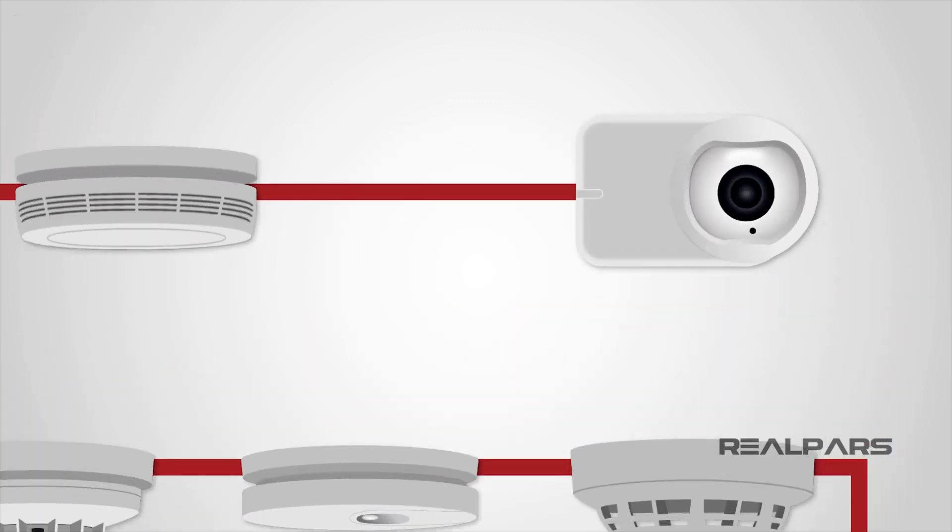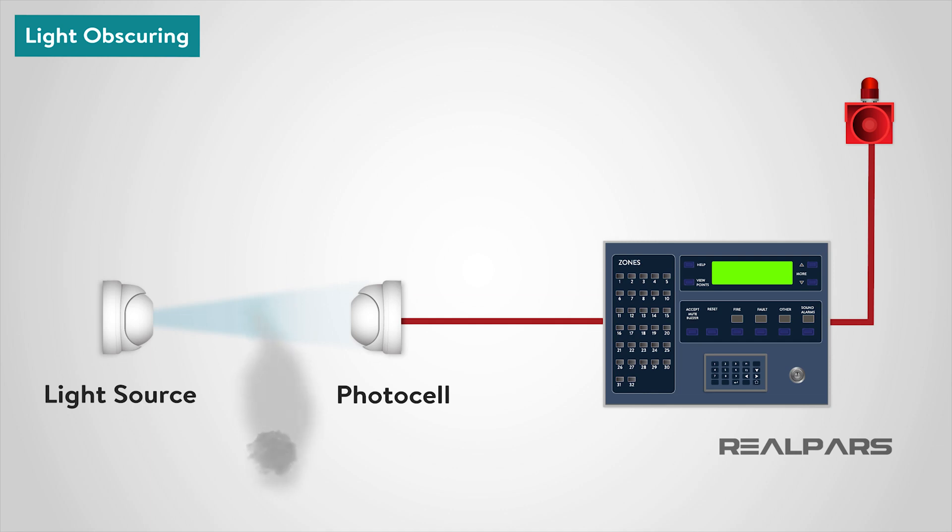In the light obscuring smoke detector, smoke interferes with a light beam between a light source and photocell. The photocell measures the amount of light it receives. The variation in photocell output is being used to initiate an alarm.